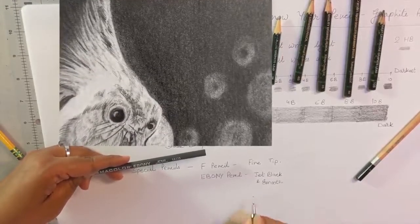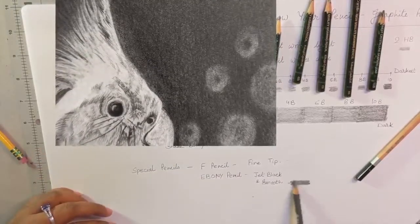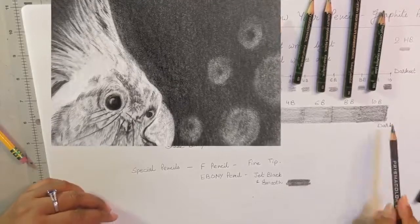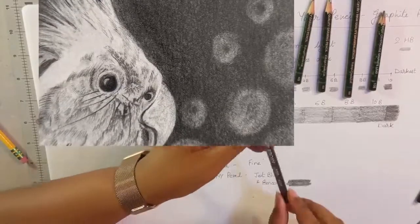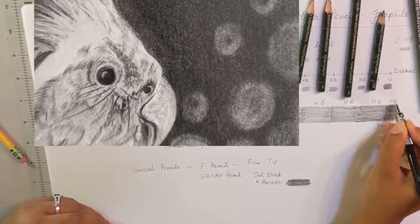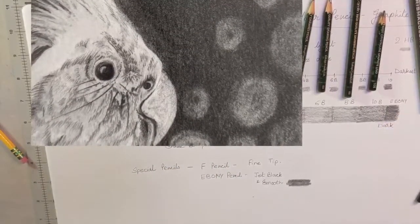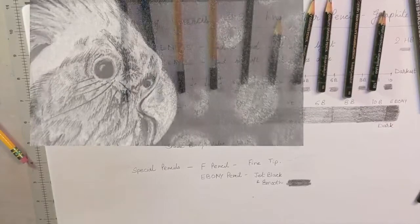And Ebony pencil is the darkest, darker than 10B, to get the jet black color or very smooth finish. Like in the eye, the shine and the jet black color—you use this pencil. It's a little darker than 10B. Generally Prismacolor makes this Ebony pencil. I use it for very dark areas just to give the accent.